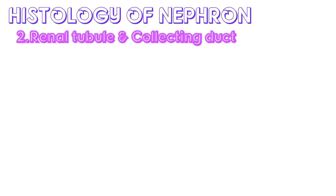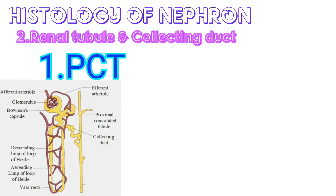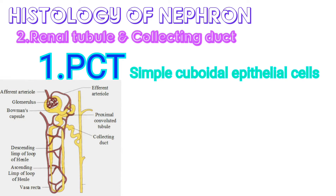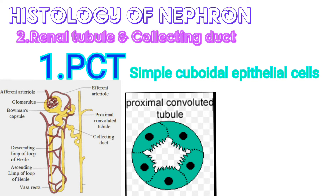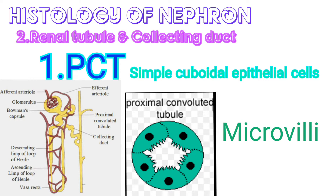The proximal portion of the renal tubule, which is present in the form of many coils, is called the proximal convoluted tubule, or PCT. PCT cells are lined by simple cuboidal epithelial cells with a prominent brush border of microvilli on their apical surface. The apical surface is the surface facing the lumen. These microvilli increase the surface area for reabsorption and secretion.